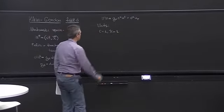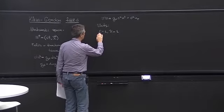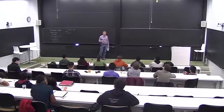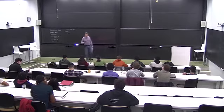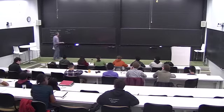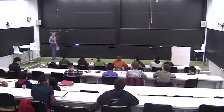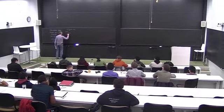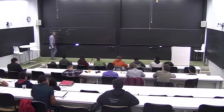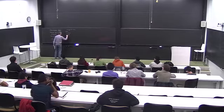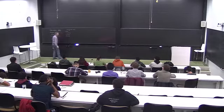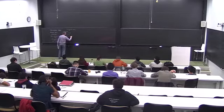Setting c=1 simply means we measure velocities in units of the speed of light, so velocity becomes dimensionless. Therefore units of time and units of distance are the same. The units of energy are the same as units of mass, because of the E=mc² relationship. This is also the same as units of momentum.